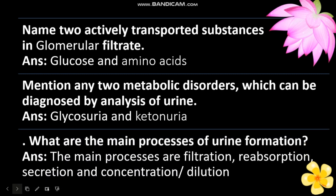What are the main processes of urine formation? The answer is the main processes are filtration, reabsorption, secretion, and concentration or dilution.